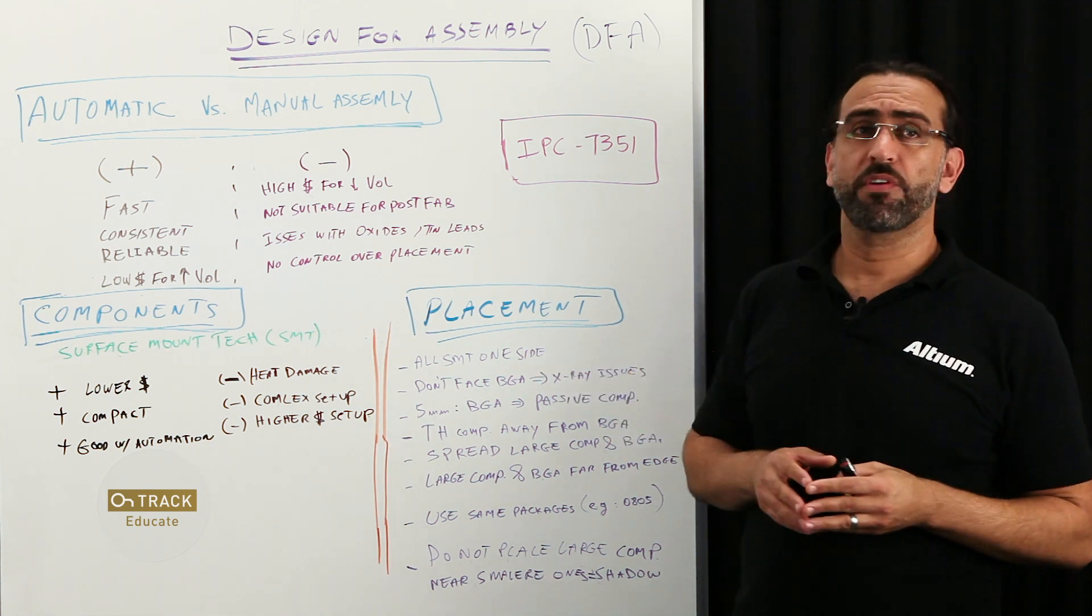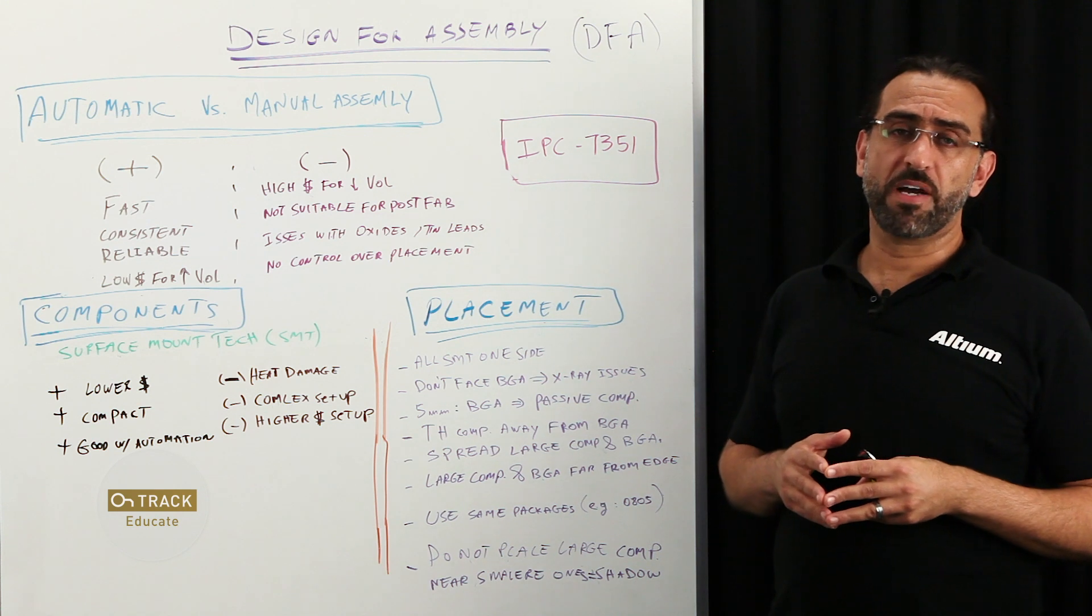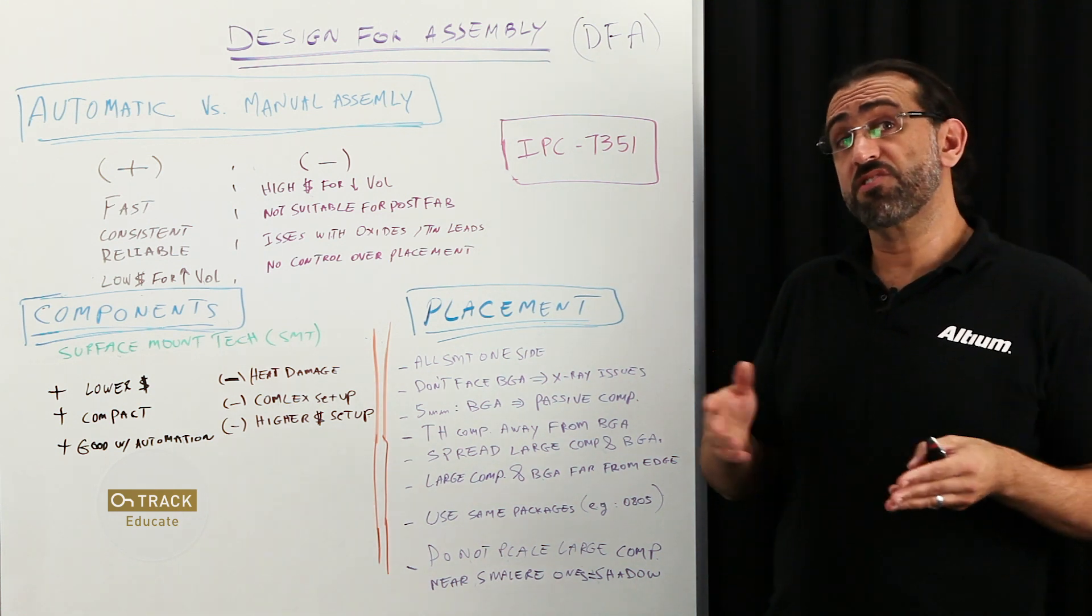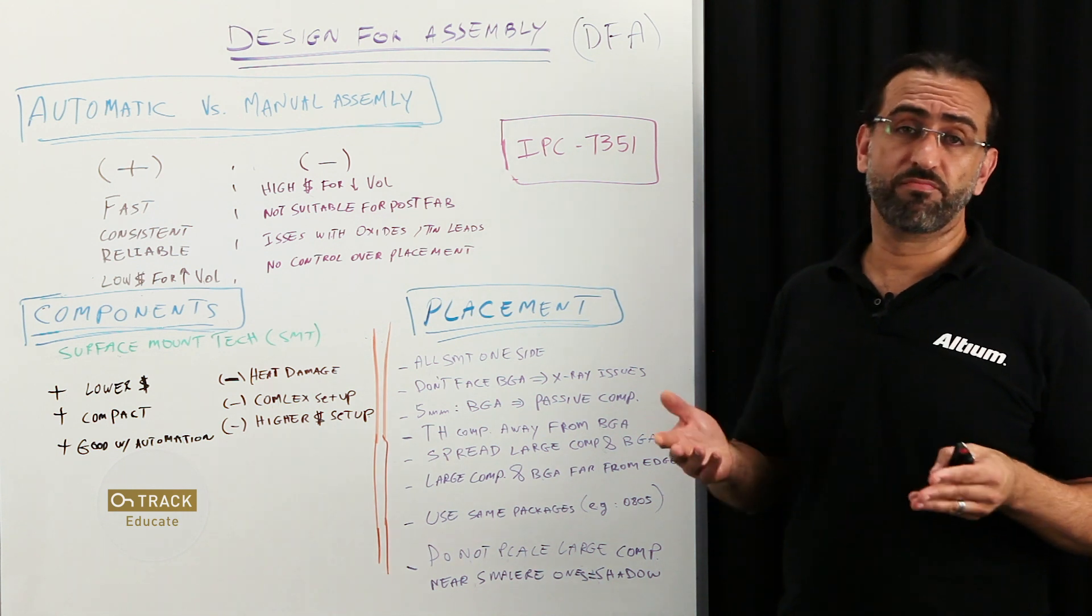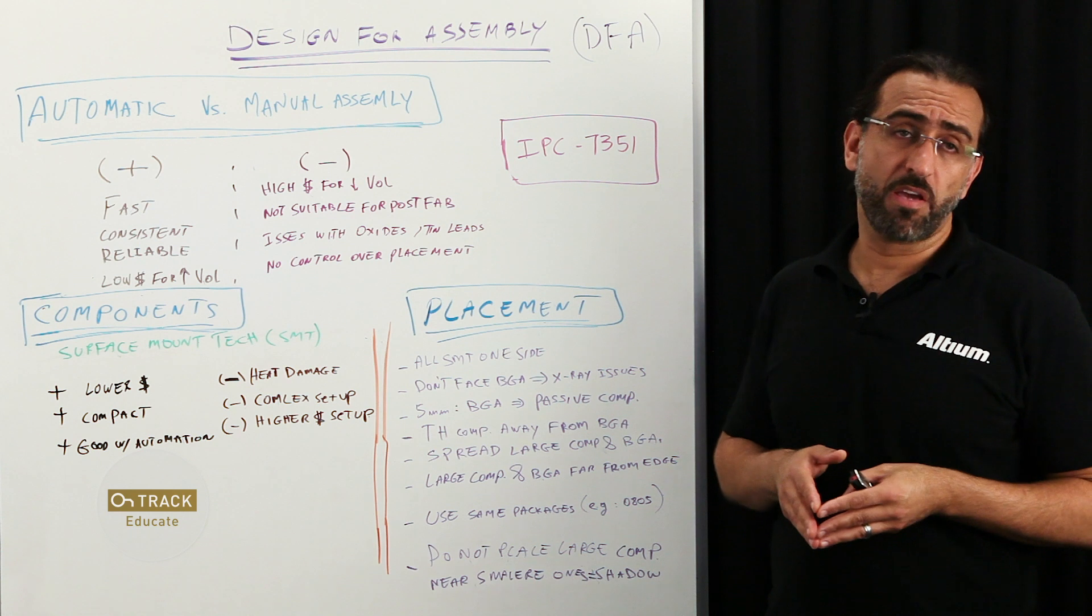Now let's move to components. With components, you have pretty much three types that you need to keep in mind: through hole components, surface mounts, and non-standard, the ones that have kind of odd shapes. An example will be an optical fiber cable.